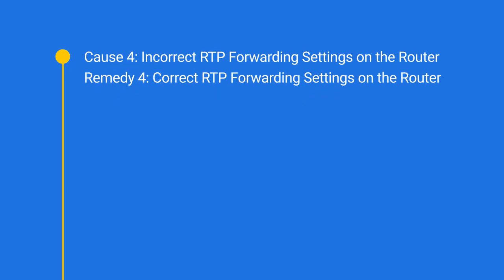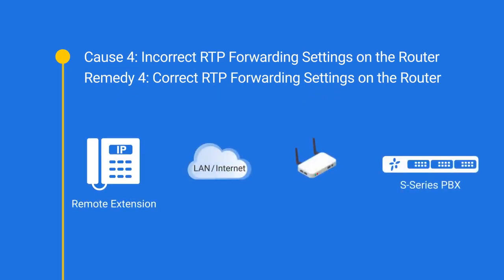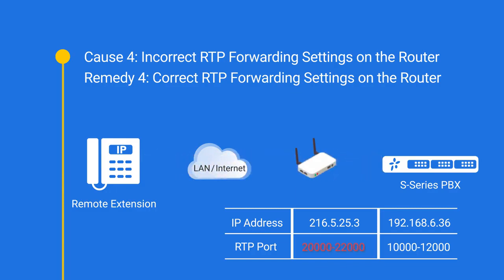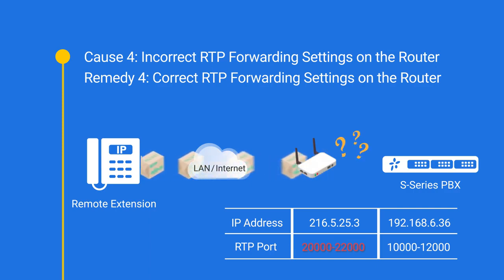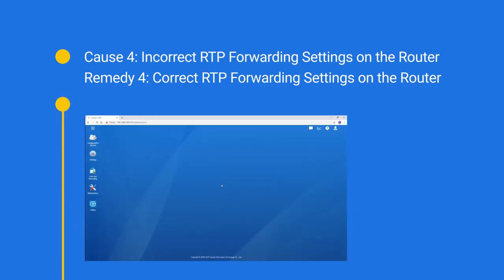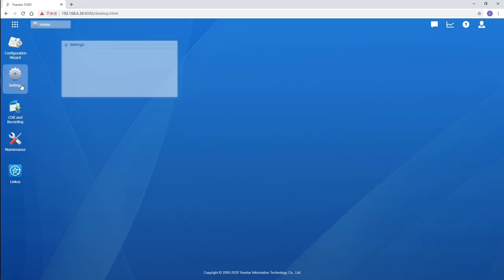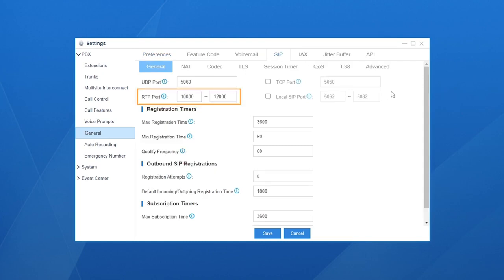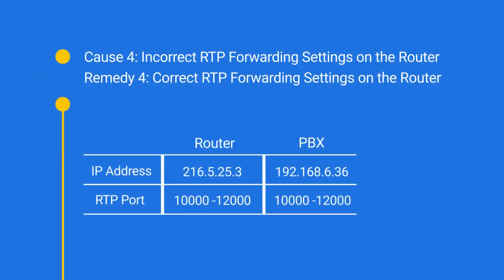As for the last cause — incorrect RTP port forwarding — this is a method to ensure RTP packets from a remote extension can be sent to the PBX behind the router. If port forwarding is configured wrong, the router won't forward the RTP packets to the PBX. To correct this, refer to your router's user guide. To check the RTP port range on the PBX, go to Settings, click PBX, then General, and select SIP. The default range is 10,000 to 12,000. The port forwarding should be symmetric. Most routers support symmetric port forwarding by default.